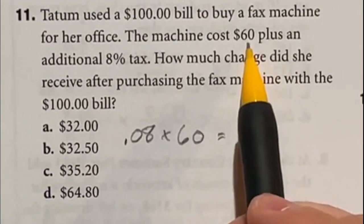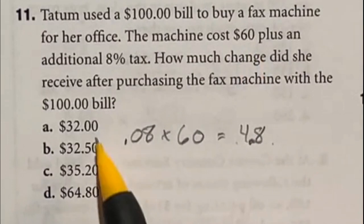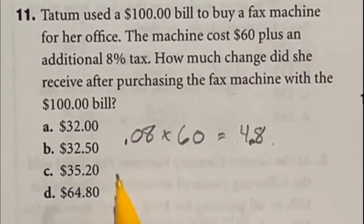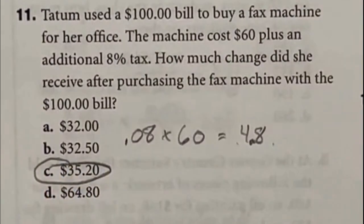When we add it to this that's going to give us $64.80 and we need to subtract that from 100. Well right off the bat looking at the answers here 80 from the 100 would give us 20. So the answer has to be C, $35.20.